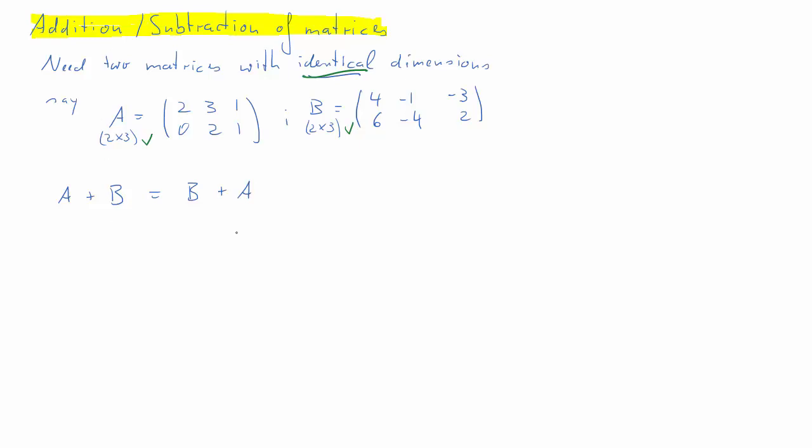It turns out addition is commutative, so we can interchange A and B. Actually, addition is; subtraction isn't. So A plus B is the same as B plus A, and we just add up the respective elements. Here, 2 and 4 is 6, 3 and negative 1 is 2, 1 and negative 3 is negative 2, and so forth.